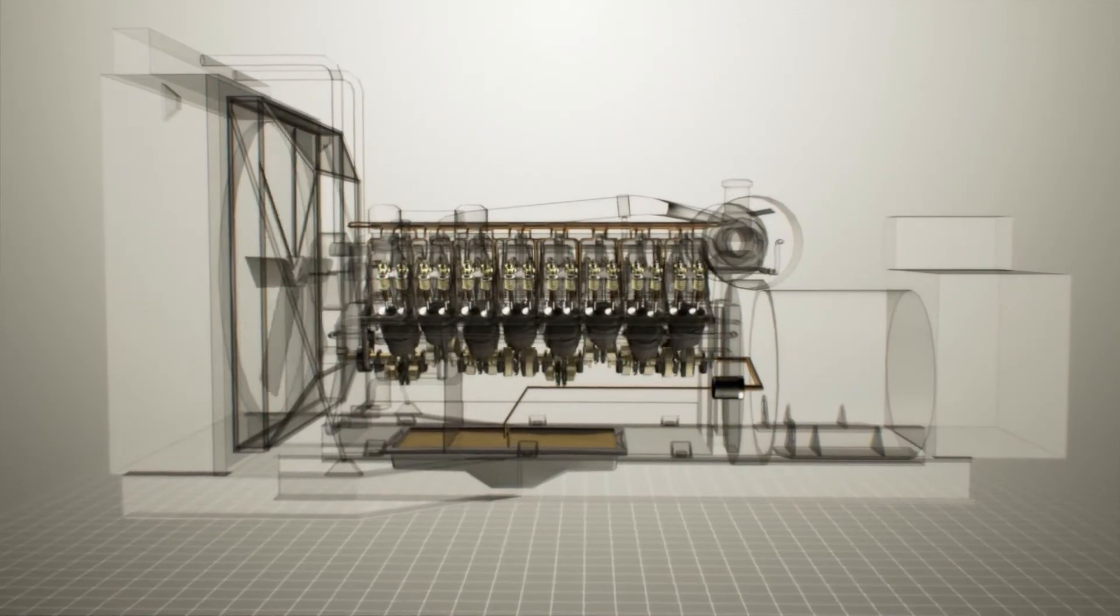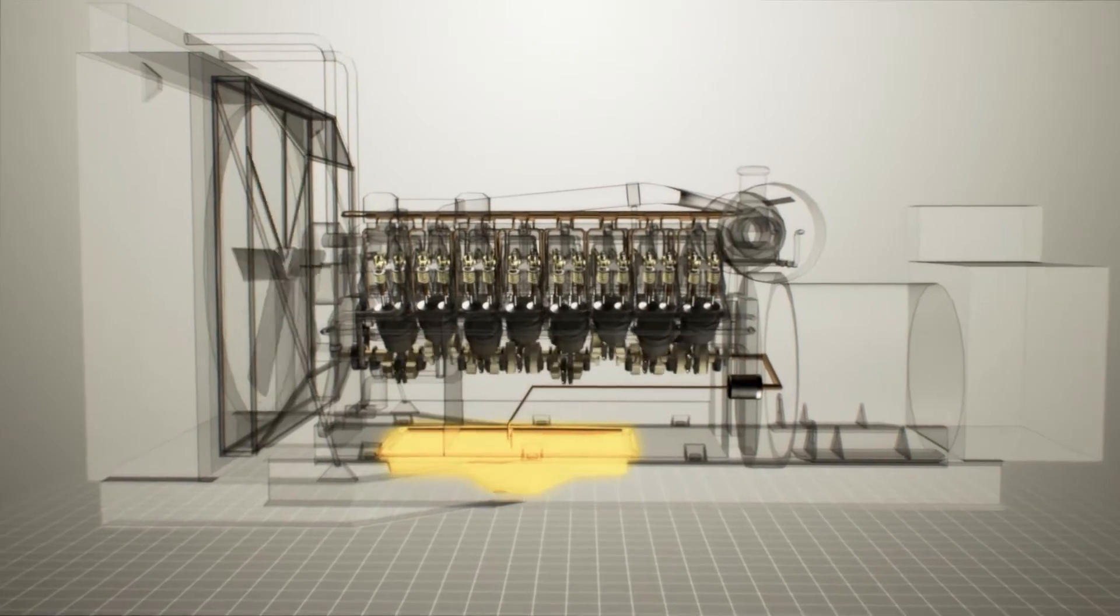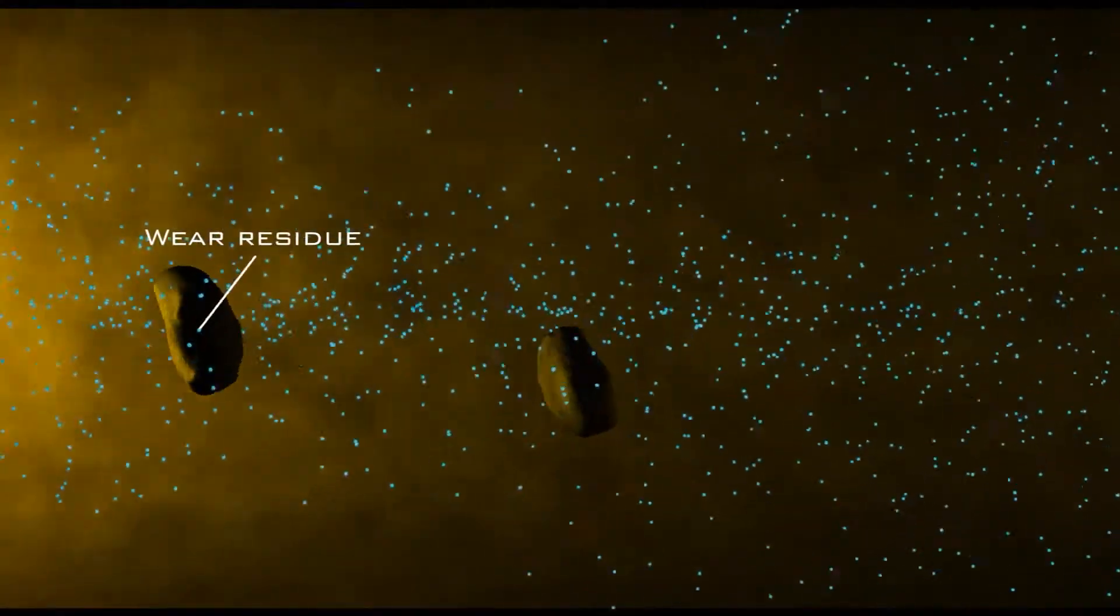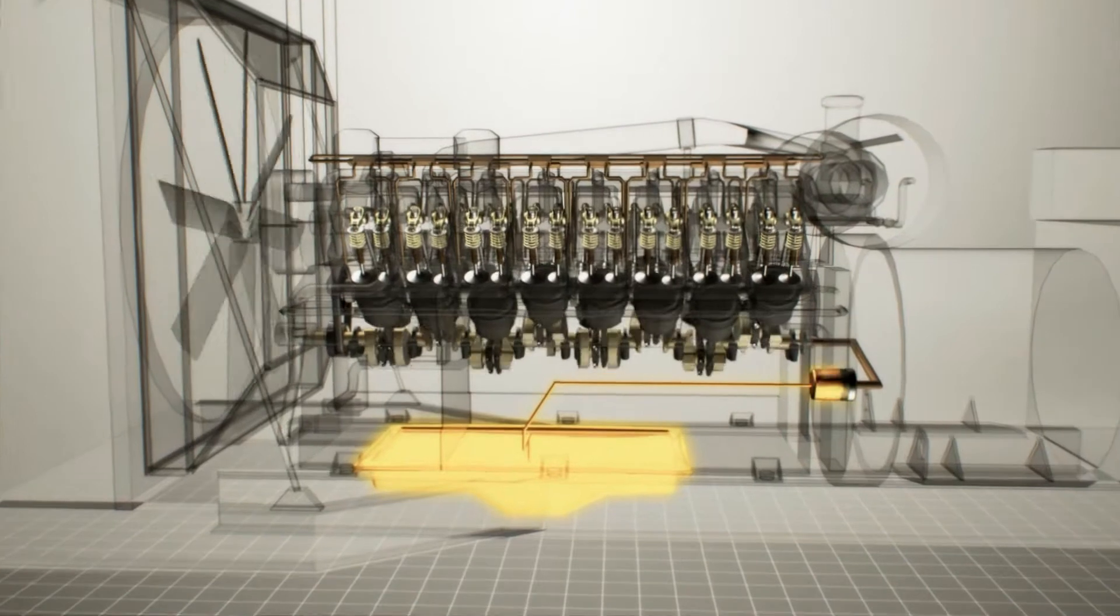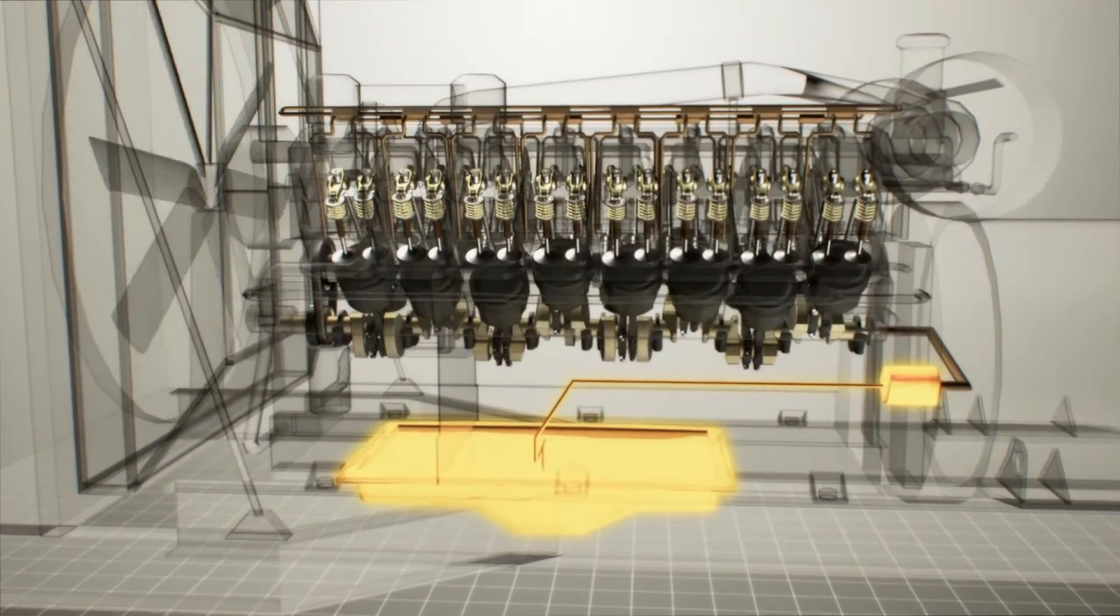Let's see how Nanolube power generation diesel engine oil actually works inside the engine. Injected with billions of super-strong tungsten disulfide, multi-layered, nano-fullerene-like particles, the Nanolube power generation lubricant starts its journey through the diesel engine.